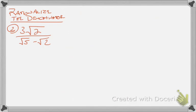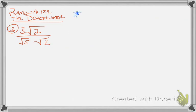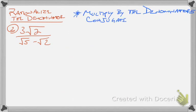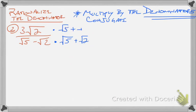Just like dividing radicals, when I have radicals in the denominator I need to rationalize that denominator. In order to rationalize it, I need to get the denominator to not have any more radicals. The way I'm going to do that is to multiply by the conjugate — specifically, the denominator's conjugate — and I have to do that to both numerator and denominator. So the conjugate of square root of 5 minus square root of 2 is square root of 5 plus square root of 2, and I multiply that to both numerator and denominator.